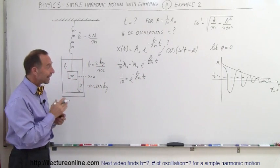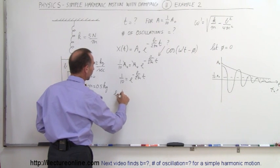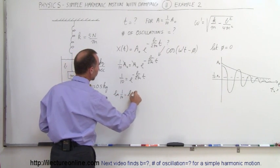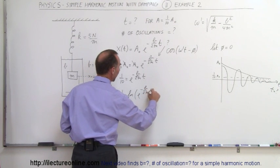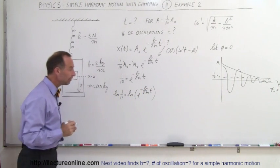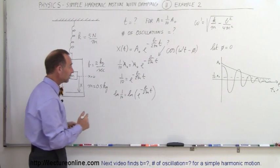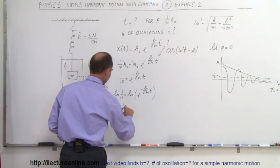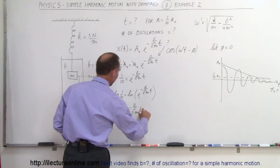What we want to do now is take the natural log of both sides to get rid of the exponential form. So we take the natural log of 1 tenth is equal to the natural log of e to the minus b over 2m times t. Of course, when we take the natural log of that, the exponential drops out, and we get the natural log of 1 tenth is equal to minus b over 2m times t.